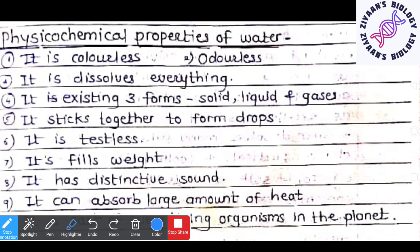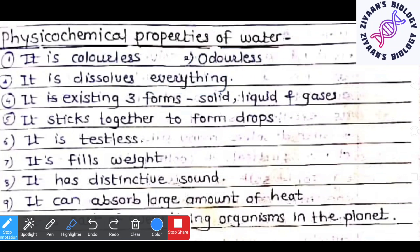Now the different physicochemical properties of water. First, water is colorless — we have never observed a proper color of water. Second, water is odorless, meaning it does not have any kind of smell or fragrance. Third, water dissolves almost everything, which is why we call it the universal solvent — or more precisely, almost universal solvent.